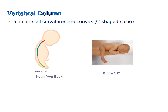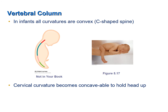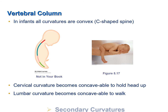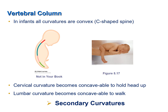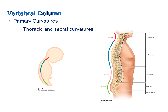Infants are born with a C-shaped spine — in other words, all of the curvatures are convex. However, once the infant learns to hold his or her head up, the cervical curvature becomes concave. And once the toddler learns to walk, the lumbar curvature becomes concave as well. Because these curvatures develop after birth, they are referred to as secondary curvatures. The thoracic and sacral curvatures are known as primary curvatures because one is born with those convex curvatures and they are maintained throughout life.